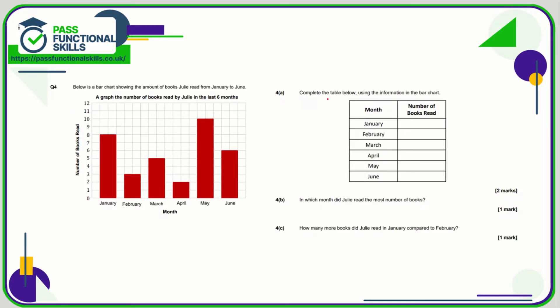Question number four, we need to complete the table. So January is this bar here, it goes up to 8. February is 3, then 5. So 8, 3, 5. April is 2, then 10, then 6.